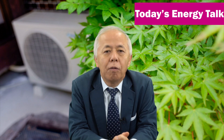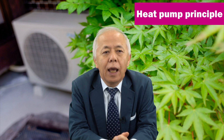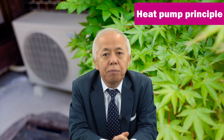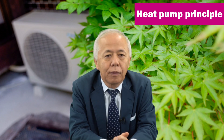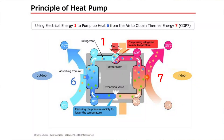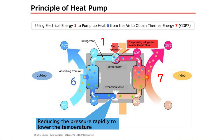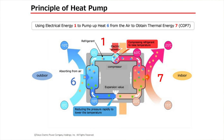Let me explain the principle of heat pumps. A heat pump works by pumping heat from the atmosphere and transferring it through heat exchange. Please take a look at this illustration. Heat exists in the air. The heat is captured in refrigerant. By compressing it, it is made hotter and the heat is exchanged inside the room to warm the room. The temperature of the refrigerant is lowered by releasing the heat, and the temperature is further lowered when the refrigerant is depressurized by an expansion valve. This cold refrigerant again absorbs heat from the atmosphere.